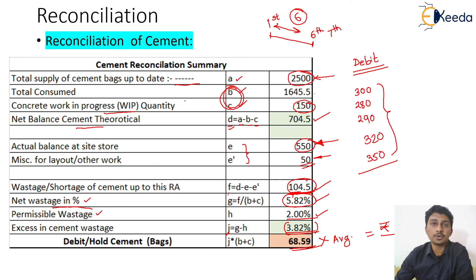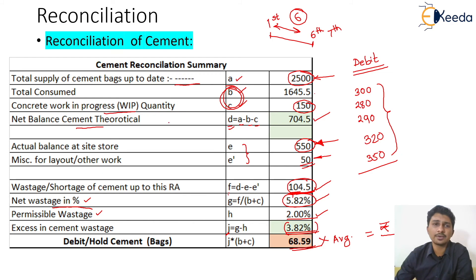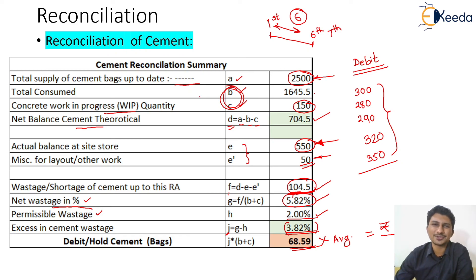This is a very important concept — reconciliation will be similar throughout. We are going to have steel reconciliation too, which will be very alike. Keep in mind that whatever quantity you are utilizing on site, you should track it on a regular basis — weekly, fortnightly, or monthly — because if you do reconciliation only at the end of the project, it will create a huge difference in your costing. You just need to keep track of it. With this, I wish you all the best — thank you so much.